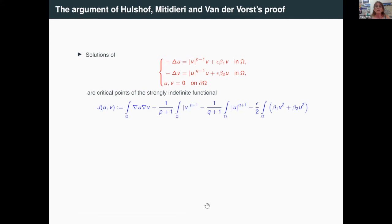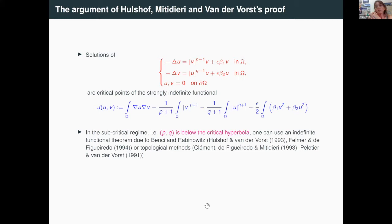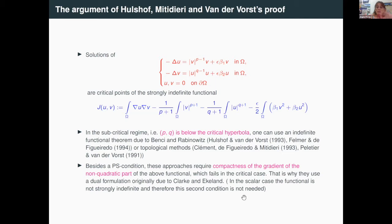This is a natural extension of what happened for the single equation. Let me say something about the proof. The argument of Alshoff, Mitidierian, van der Borst uses this point of view: solutions to our system, in the case alpha is zero, are critical points of a strongly indefinite functional. This term causes a lot of troubles. In the subcritical regime, when the pair PQ is below the critical hyperbola, one can use an indefinite functional theorem due to Benci-Rabinowitz or topological methods.